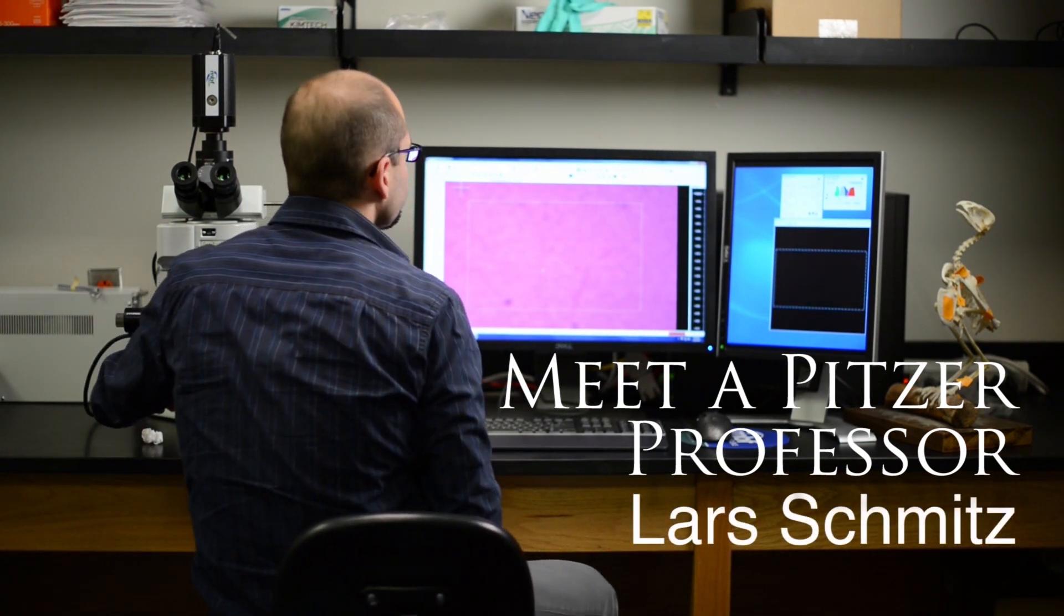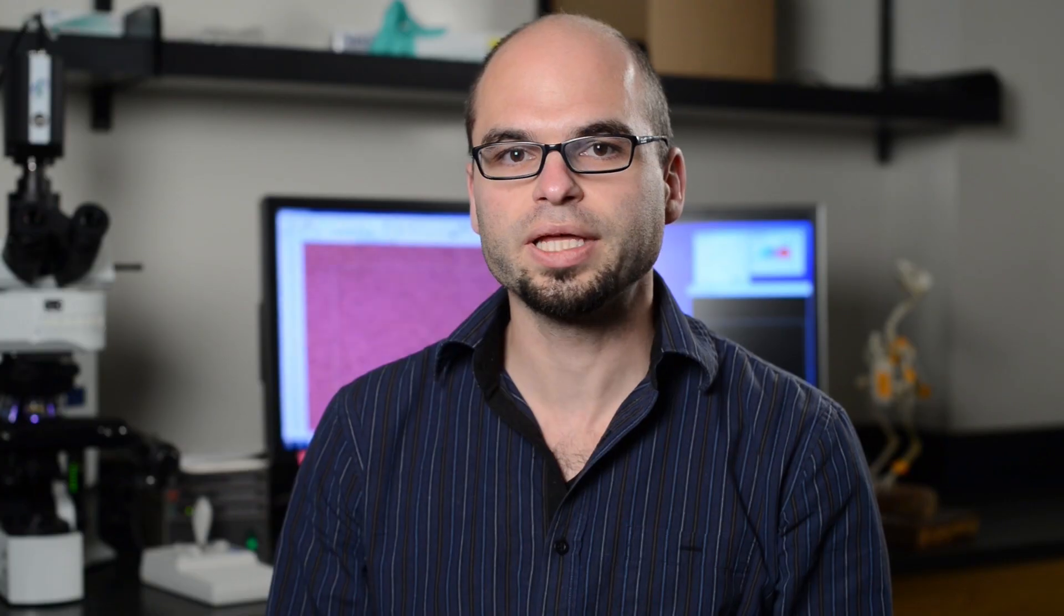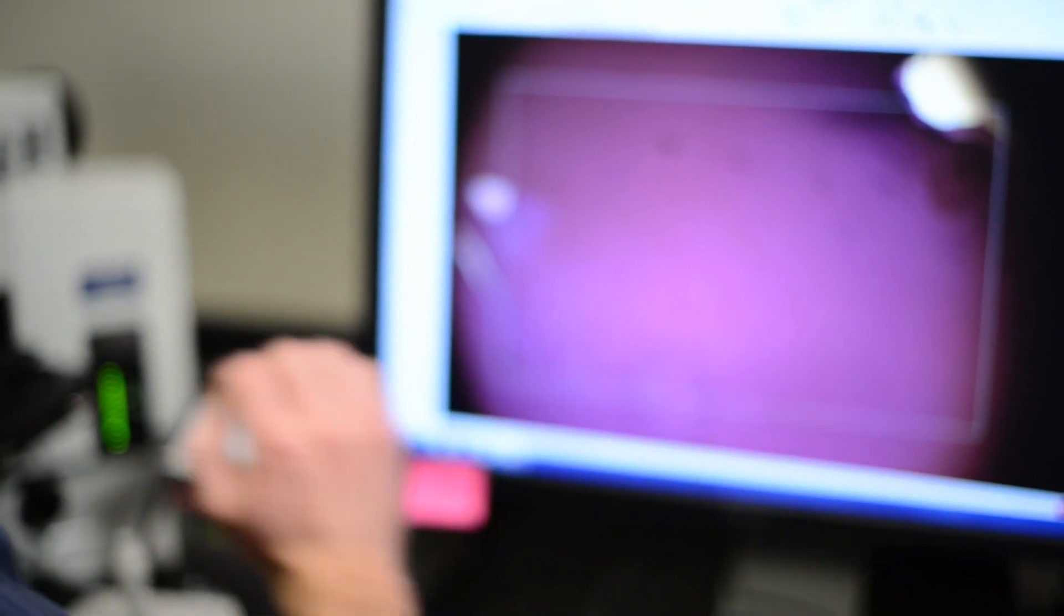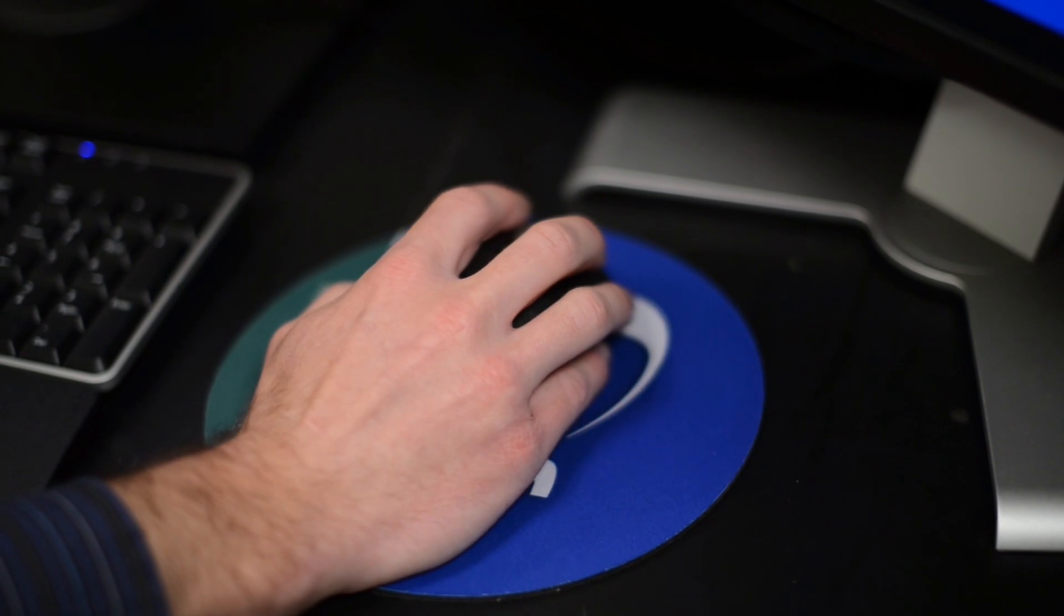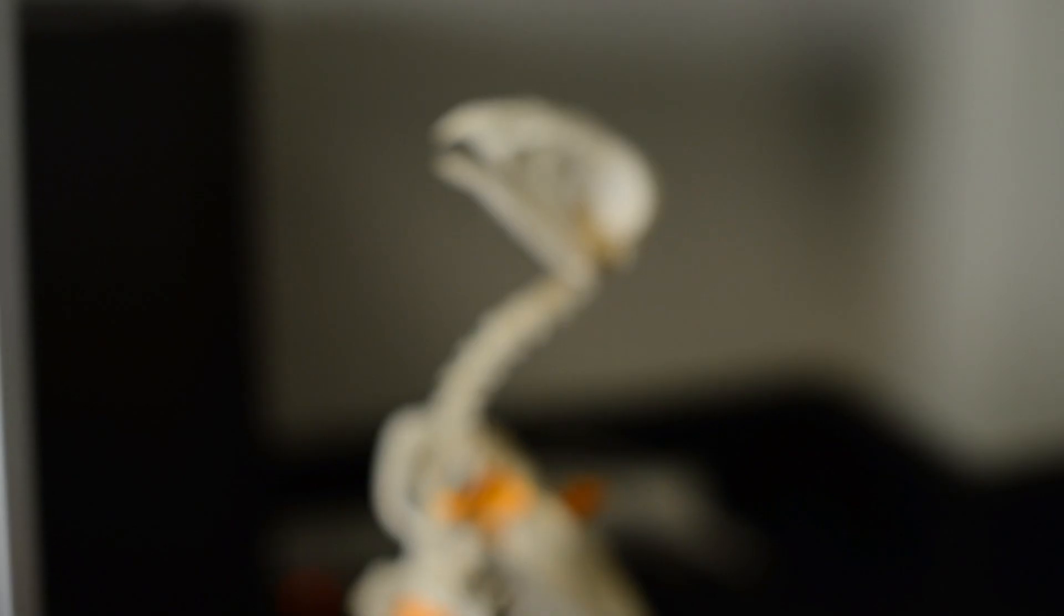My name is Lars Schmitz. I'm an assistant professor of biology in the Keck Science Department of the Claremont Colleges. I am specializing on the visual system. I'm interested in the evolution of eyes, and primarily I'm looking at the evolution of vertebrate eyes.